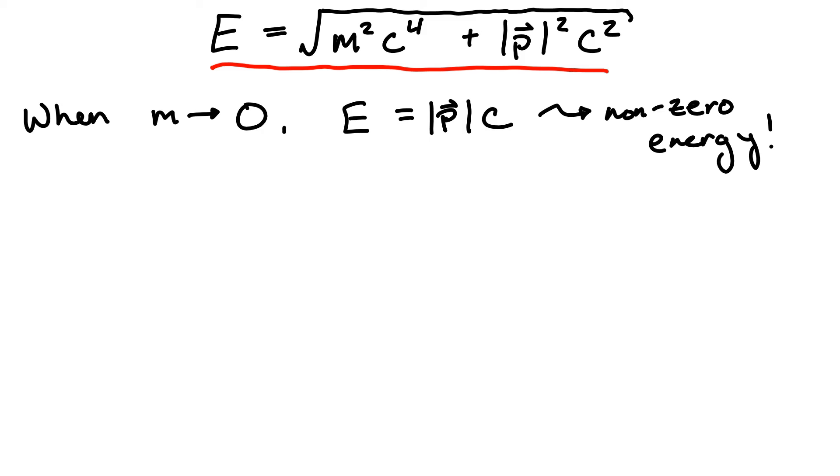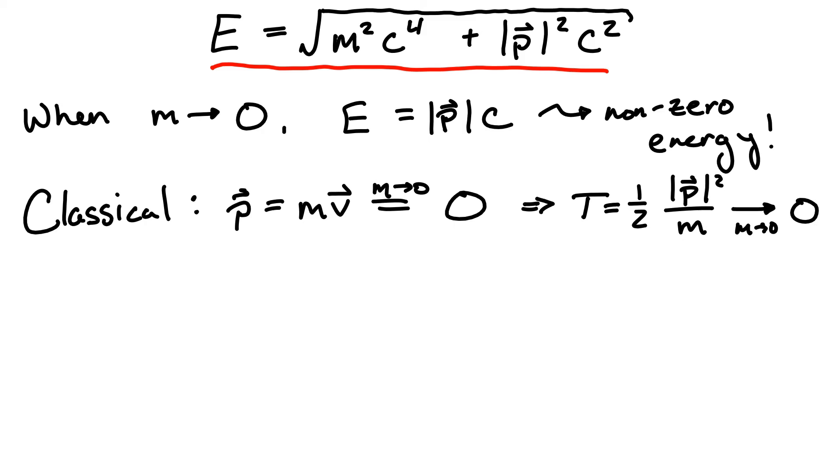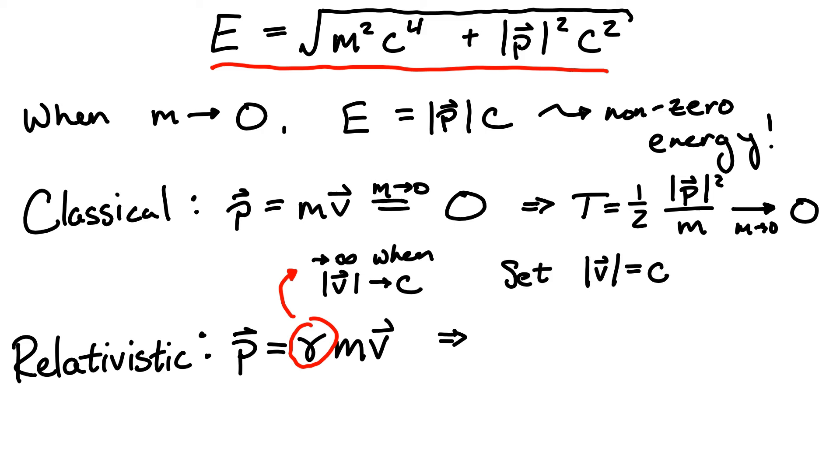But is this even a reasonable assumption to make? In classical mechanics, if we take the mass of a particle to zero, its momentum, and therefore its energy, also vanish. But remember that the relativistic version of the momentum includes an extra factor of gamma. The interesting thing to note is that if we take m to zero, as well as the inverse of gamma to zero, at the same time, we can get a finite non-zero result.